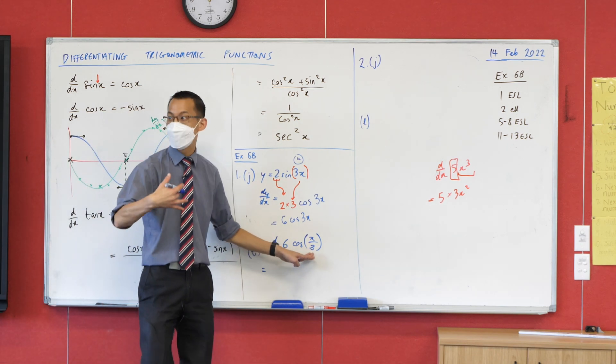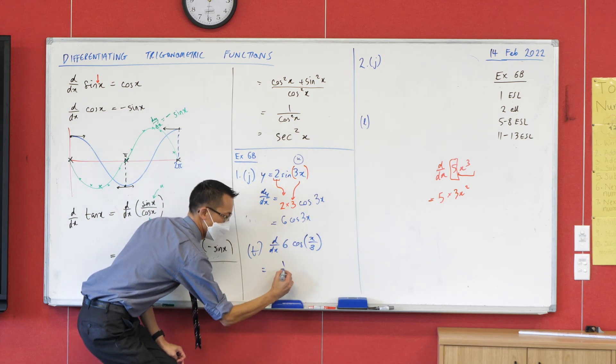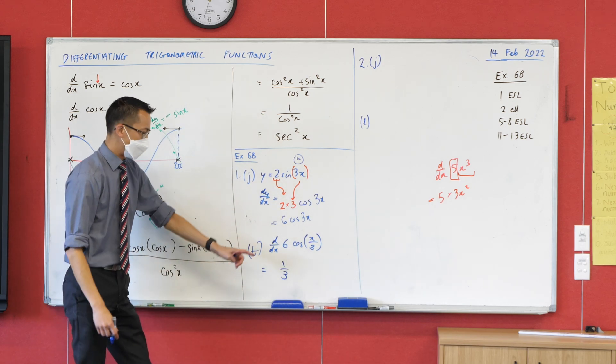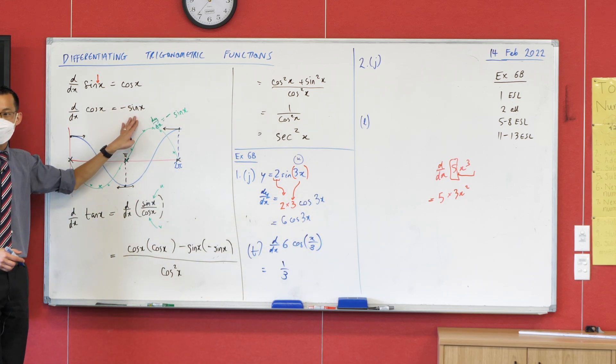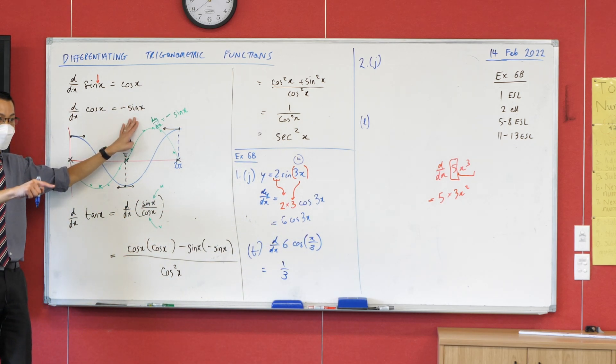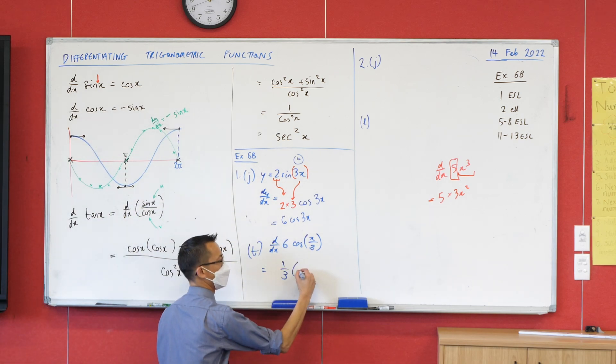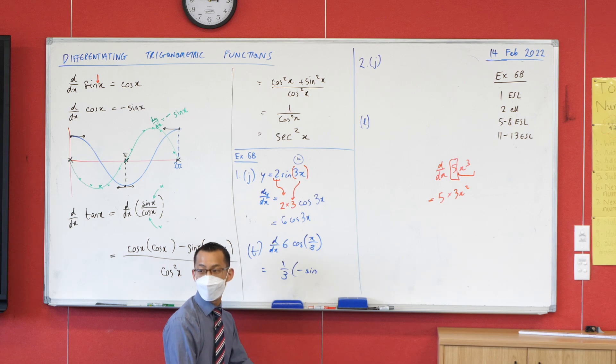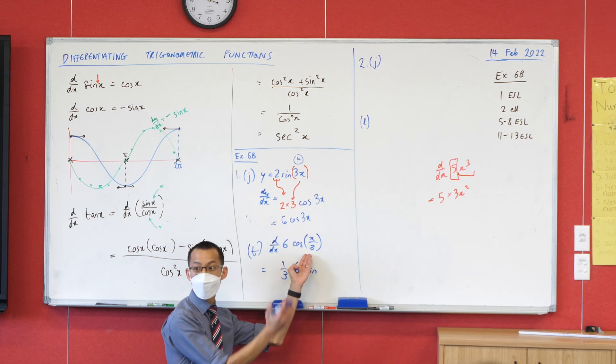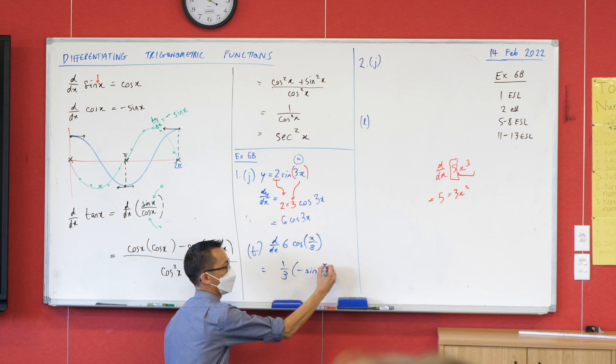That's going to be a third, because I would write this as a third times x. So you're just going to have a third. That cos is going to turn into, just be watchful, cos turns into negative sine when you differentiate it. So I'm going to write that as negative sine, but it's not sine x, it's sine of x on 3. Whatever was there before, it just sort of carries along, right?